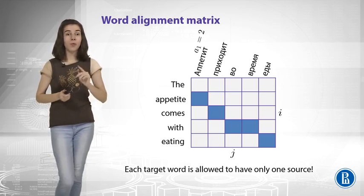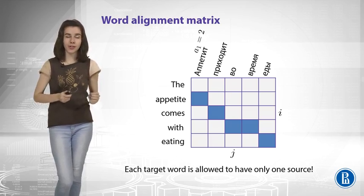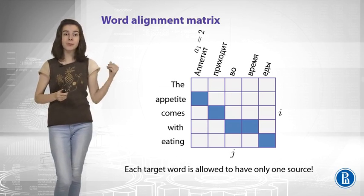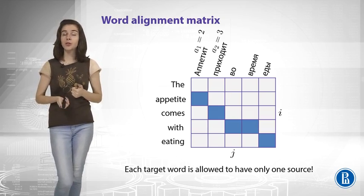Now what would be the notation here? So we will have A1 which will represent the number of the source word which is aligned to the first target word. So this is appetite and this is the second word. Now what would be A2? So A2 will be equal to 3 because we have comes matched to приходят which is the third word in our source.